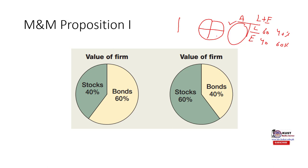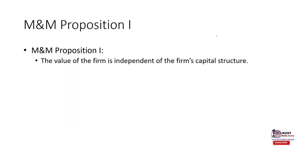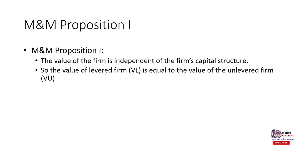So proposition one says capital structure is irrelevant. According to proposition one, the value of the firm is independent of its capital structure — capital structure does not affect the value of the firm. The value of the leveraged firm equals the value of the unleveraged firm: VL = VU. We are going to prove this proposition in a while.